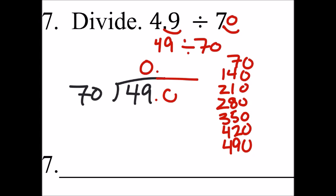So it goes into 490 exactly one, two, three, four, five, six, seven times. And it looks like our decimal right there is 0.7.